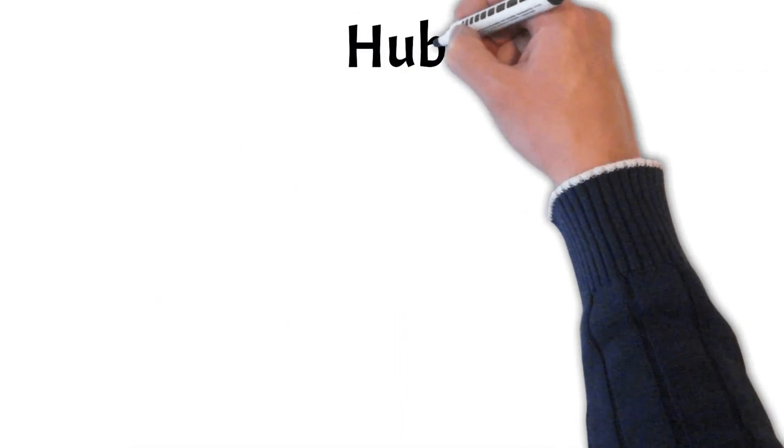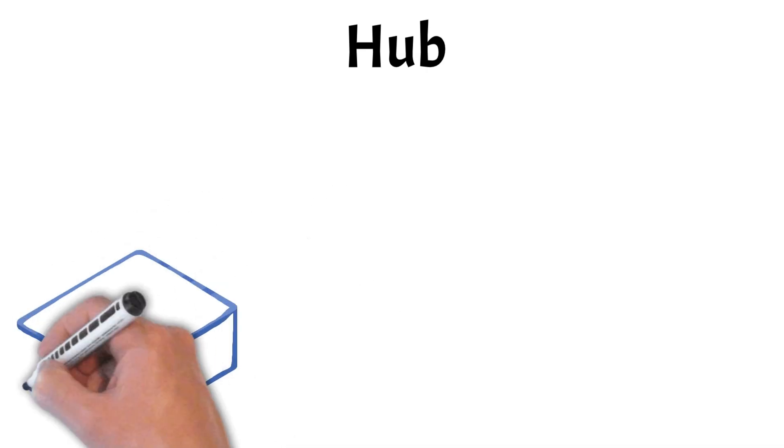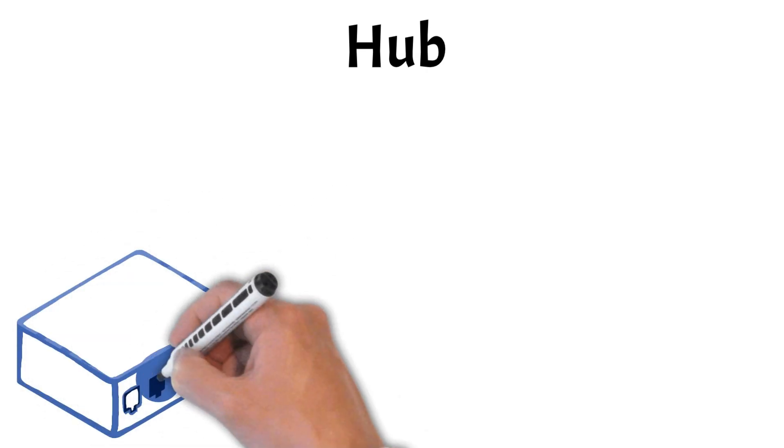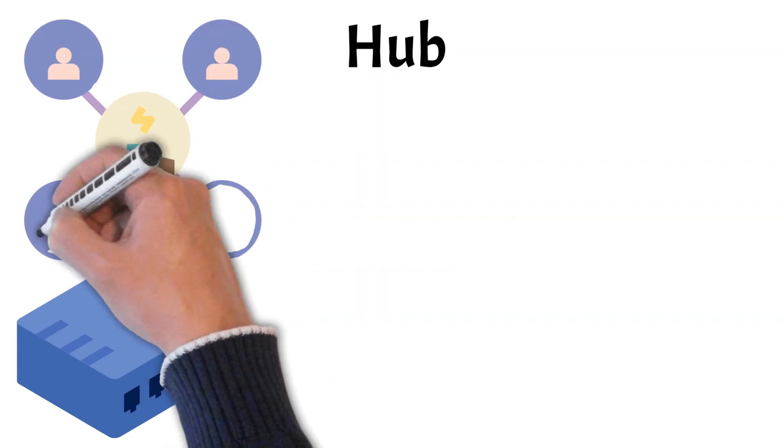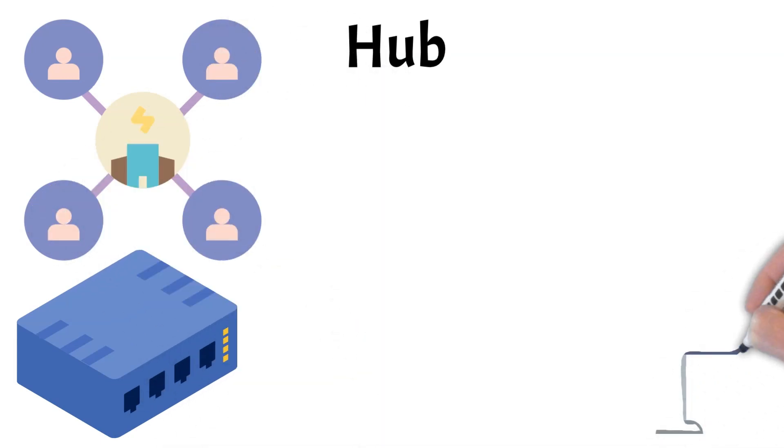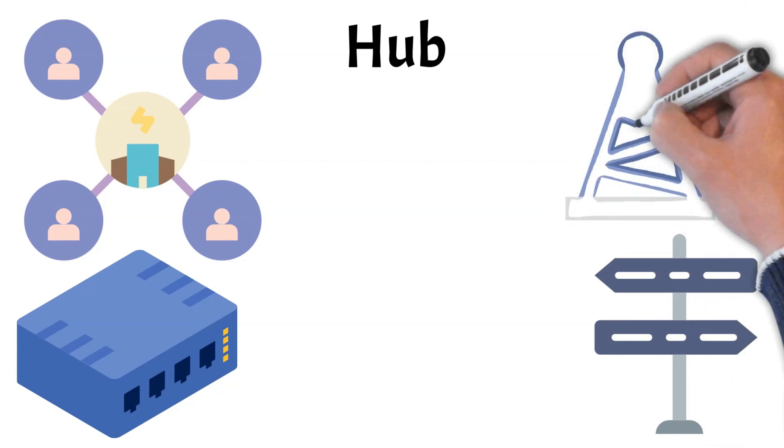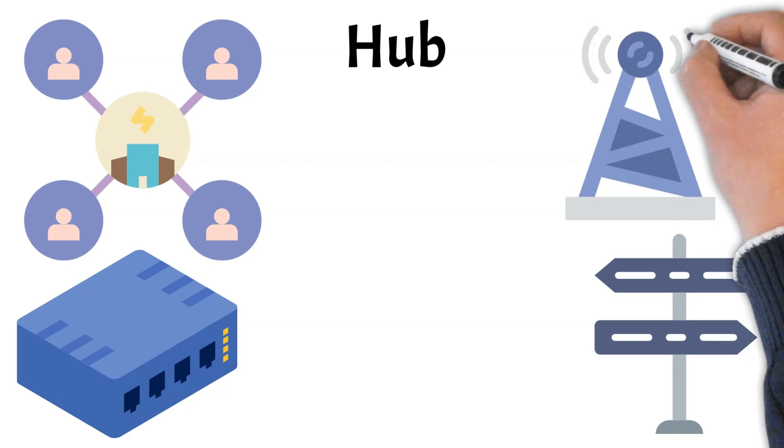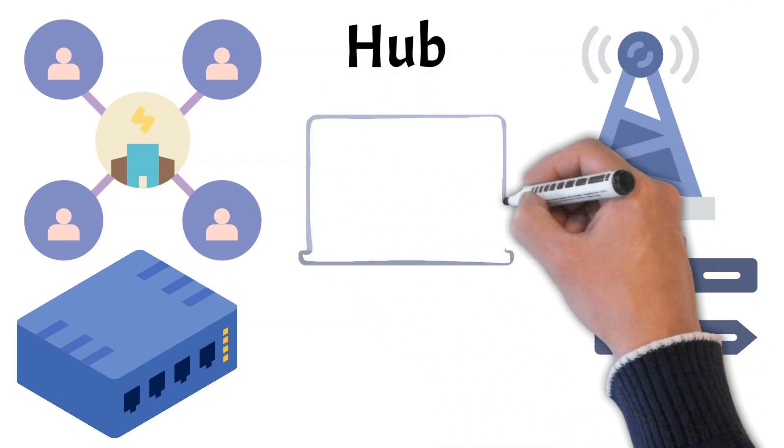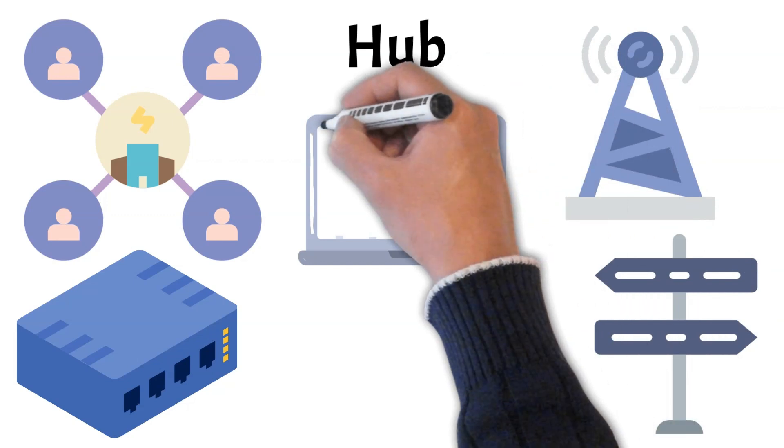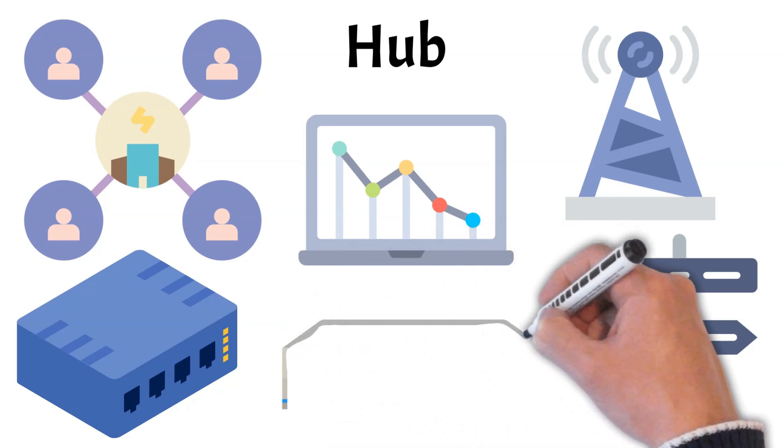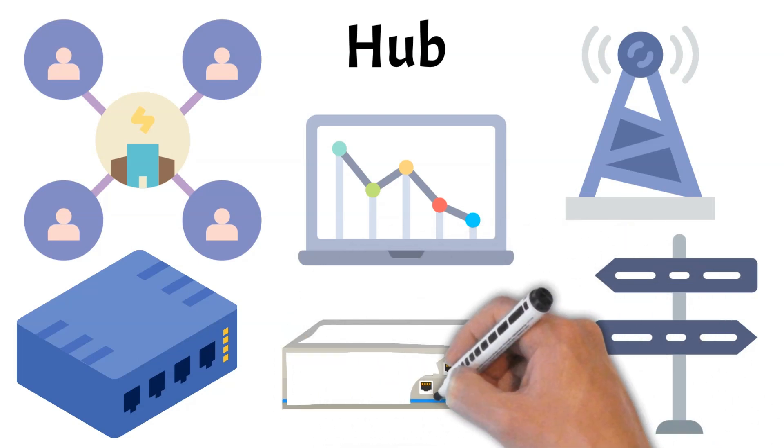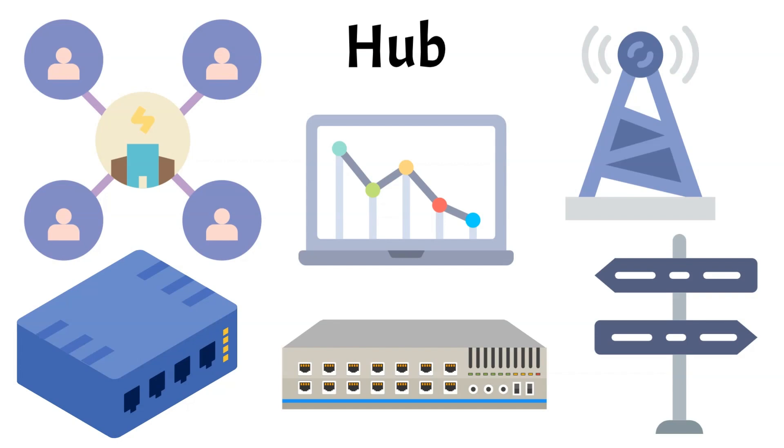Next, let's take a look at the hub, one of the most fundamental devices in early network setups. A hub connects several computers or devices within a local area network, but operates with far less sophistication than more modern equipment like switches or routers. Instead of directing data to specific devices, a hub simply broadcasts any data it receives to all connected devices, regardless of its intended destination. This results in network inefficiencies and potential collisions, as every device processes the data, whether it's meant for them or not. Though widely used in the past, hubs have largely been replaced by switches due to their superior ability to manage network traffic.